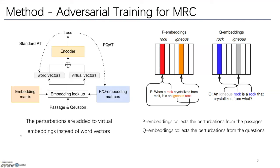Here is a comparison of standard AT and PQAT. In the standard AT, the perturbations are added to the word vectors. Thus, different occurrences of the same word might receive different perturbations.